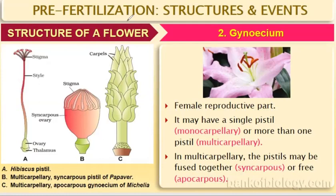Today we are starting with the structure of the flower about the gynoecium. Just like the androecium was the whorl of stamens, gynoecium is the whorl of the female reproductive organ — basically the carpel. Carpel forms the gynoecium. Gynoecium is the female reproductive part.